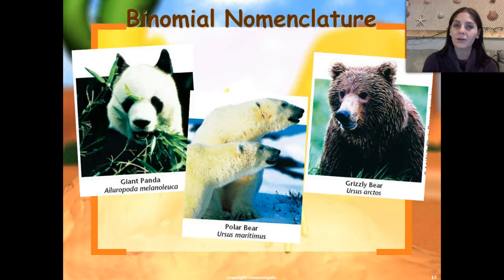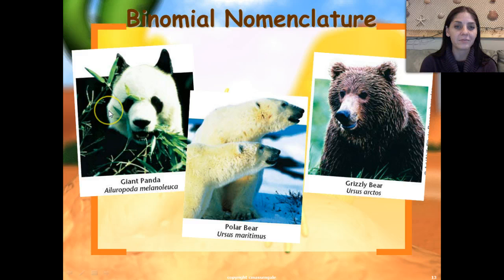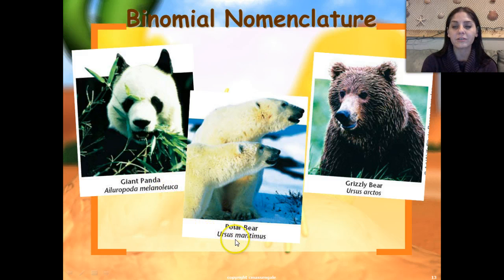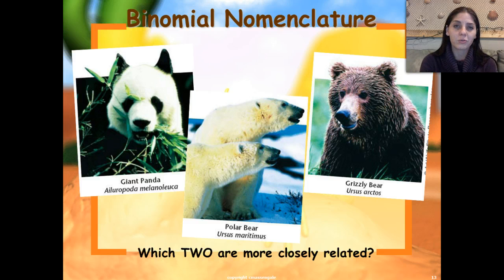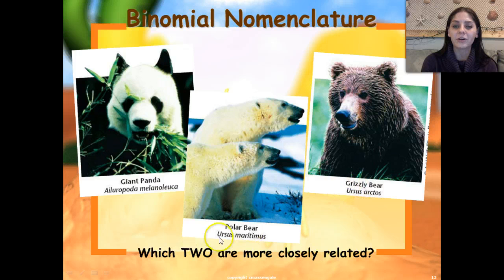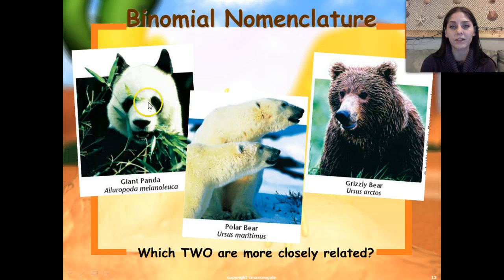So here are a couple of other examples of binomial nomenclature. This is commonly called the panda, but its binomial nomenclature is Ailuropoda melanoleuca. The polar bear is called Ursus maritimus, and the grizzly bear is called Ursus arctos. So which two of these are more closely related? If you look at their scientific names, you would see that both the polar bear and the grizzly bear have the genus name Ursus, so those two would be more closely related to each other than they would to the panda.